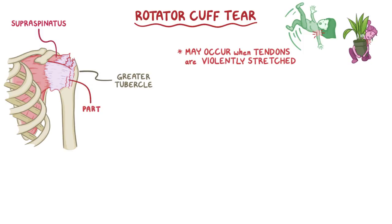The tears may be partial, where the tendon is damaged but not completely torn, and may even go unnoticed. Alternatively, the tear may be a full thickness tear, where the tendon is completely detached from the humerus.